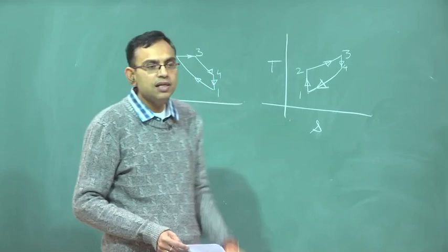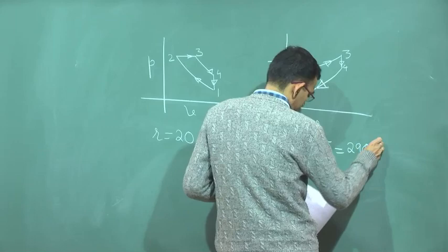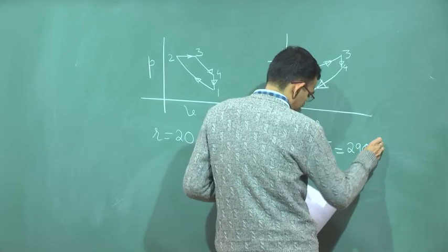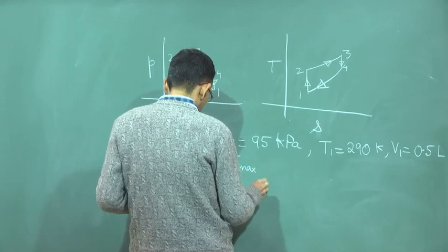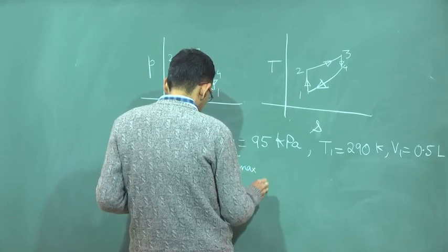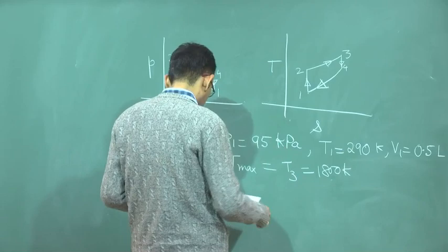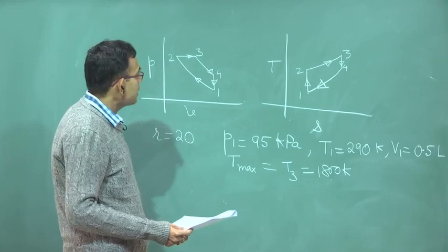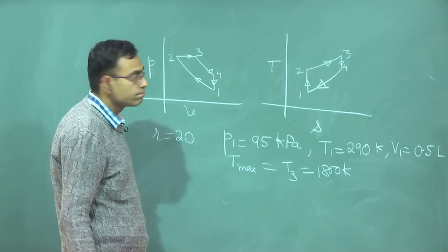Given data: R = 20, P₁ = 95 kPa, T₁ = 290 Kelvin, V₁ = 0.5 liters, and T_max = T₃ = 1800 Kelvin. The maximum pressure is P₂, since P₂ and P₃ are the same in the Diesel cycle.